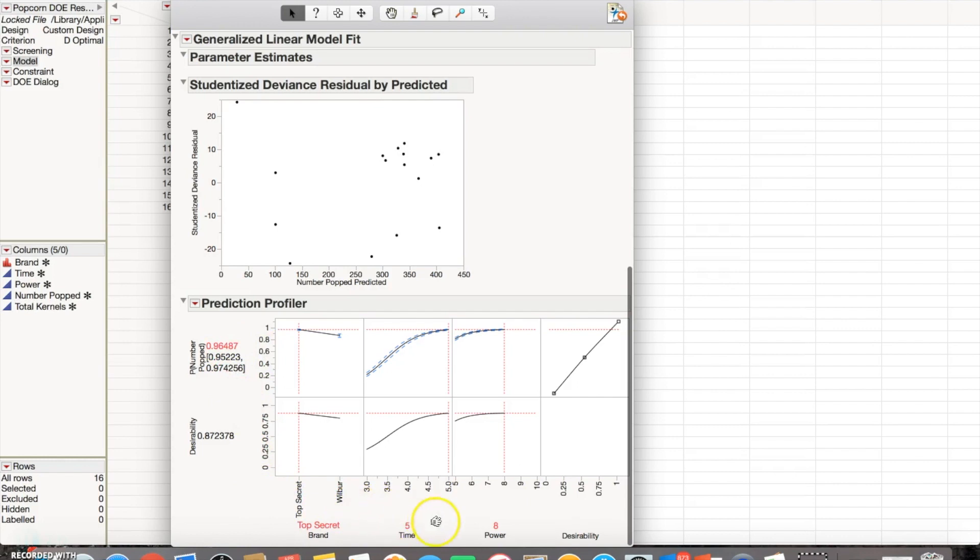This will be our max, what we want for the most out of the number popped. It's giving us 0.96 as the number popped—not 100%, but really close. We're using Top Secret brand, time of 5, power of 8. So this is our best model.